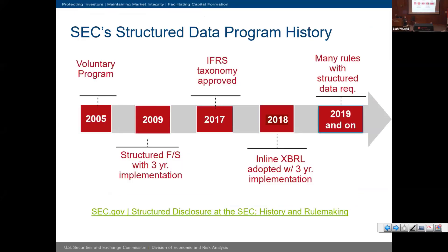Let's do a quick history of how the structured data program at the SEC came about. In 2005 there was a volunteer program allowing filers to give us XBRL data if they wanted to. Then in 2009 we adopted interactive data rules requiring operating companies, and later mutual fund companies, to give us XBRL data with a three-year phase-in — the biggest filers going first, non-accelerated small reporting companies and former private issuers going last. The IFRS taxonomy was adopted in 2017 — a big milestone, since we had always had a GAAP taxonomy since 2010 but not an IFRS taxonomy until then.